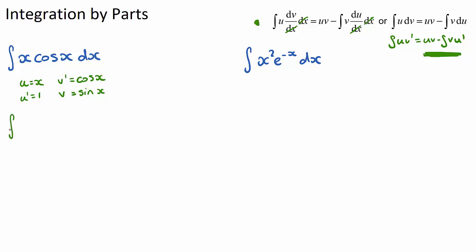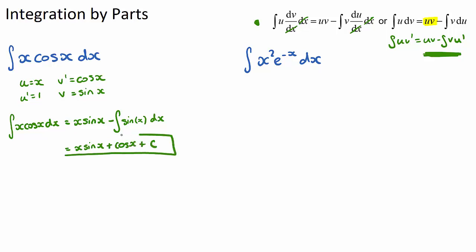Now we rewrite our question. The integral of x·cos(x) dx equals u·v, which is x·sin(x), then subtract the integral of v·u'. That is sin(x) times 1, so minus the integral of sin(x) dx. Continuing: x·sin(x), and the integral of sin(x) is negative cos(x). With the minus already there, we get a double negative, giving plus cos(x), plus c. That's our answer for part 1.